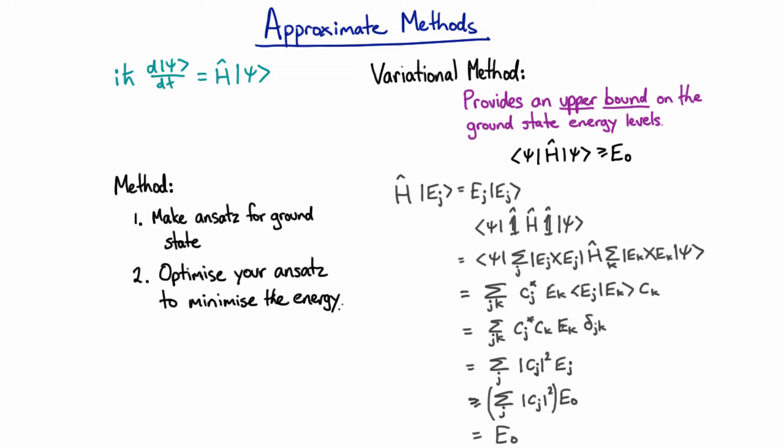As you get better and better ansatzes and as you optimize, you're lowering and lowering your upper bound on the ground state energy. All of which may seem a little abstract, so let's do an example. Let's go back to the physicist's friend, the harmonic oscillator.